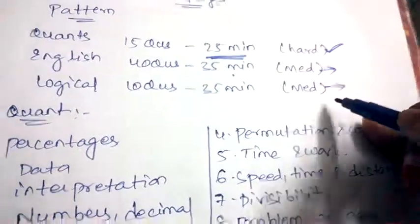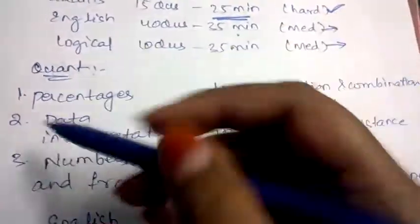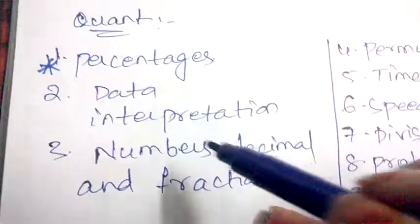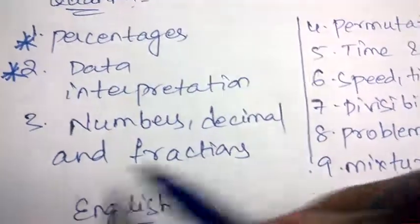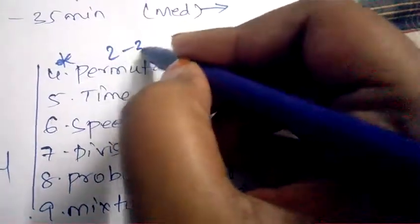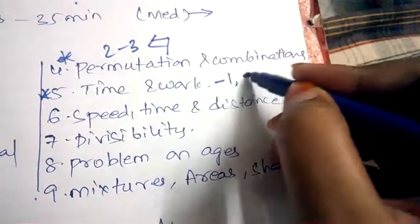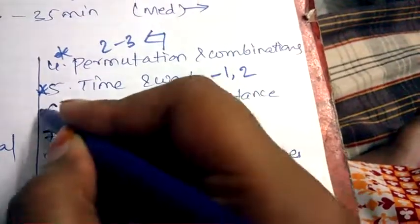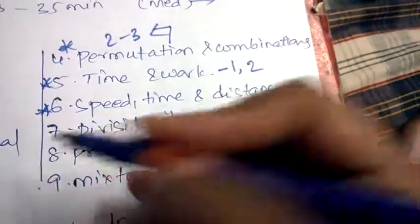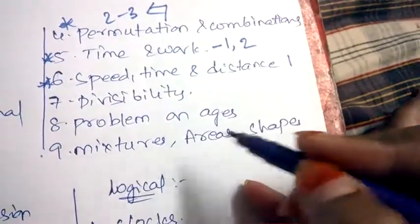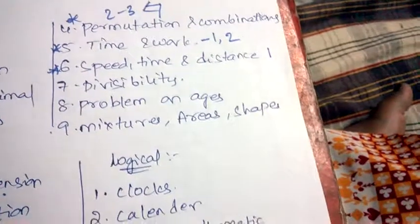Let's see the Quant syllabus. They'll be asking questions on percentages which is very important, data interpretation which is very important, numbers, decimals and fractions, permutation and combination - minimum two to three questions will be asked. Time and work, one question will be asked maybe even two. Speed, time and distance, one question will be asked. Divisibility, problems on ages, mixtures, shapes and areas.